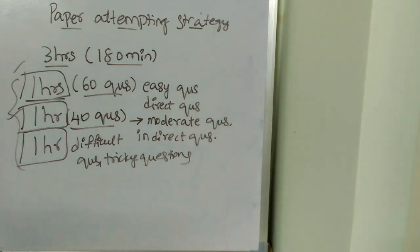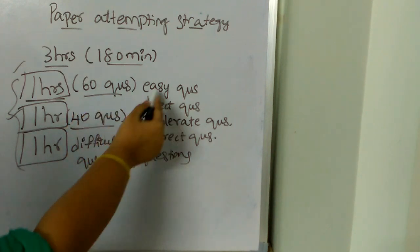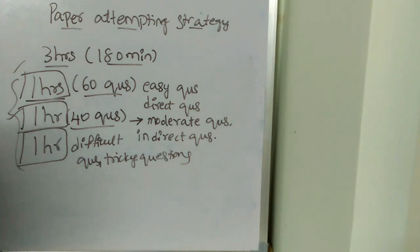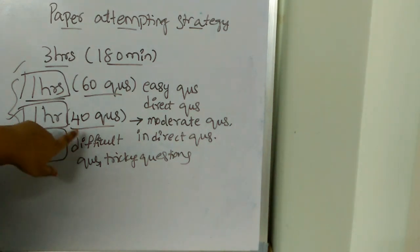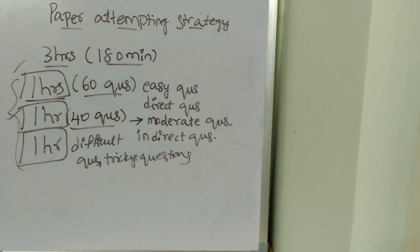In the first hour, aim to attempt 50 questions and solve easy and direct questions. In the second hour, aim to attempt at least 40 questions and in the second hour of 40 questions you need to target moderate and indirect questions. And in the third hour, concentrate on difficult and tricky questions. So this is the first paper attempting strategy. Now I am going to tell you...